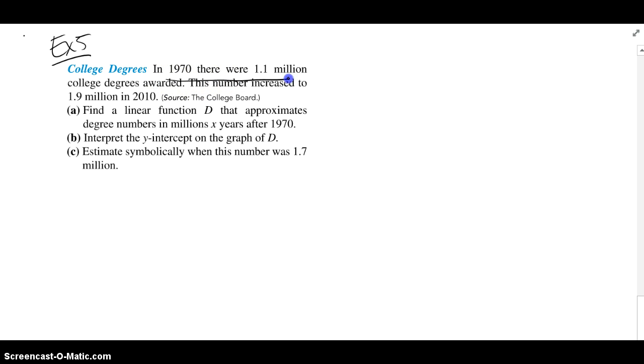Okay, example 5 says in 1970, there were 1.1 million college degrees awarded, and then this number increased to 1.9 million in 2010. So we're supposed to find a linear function d that approximates the degree numbers in millions x years after 1970. So that's important. It says after 1970, which means time sort of begins for us in 1970. So because of that, I have the ordered pairs, 1970, which is the initial time since it said after 1970. So that's going to be my 0 for the year. That's when things start, and the y-coordinate is going to be the 1.1 million. On this side, 2010, well, how many years after 1970 is that? That's 40 years later, 30 years to get to the year 2000, another 10, 40 years later. Now it has risen up to 1.9 million degrees awarded.